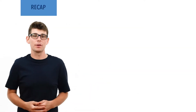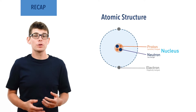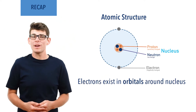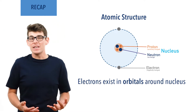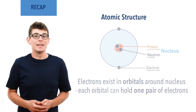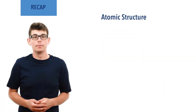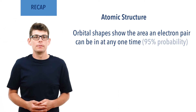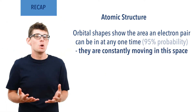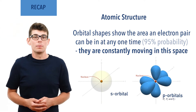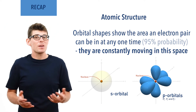Before we talk in detail about covalent bonding, there are a few essential ideas you need to be comfortable with. Atoms are made up of protons, neutrons, and electrons. Negatively charged electrons exist in orbitals around a positively charged nucleus. Each orbital around an atom can hold one pair of electrons. There are different shaped orbitals depending on their distance from the nucleus. At this level, s and p shaped orbitals are the ones most commonly studied, although you do need to be aware of other shapes, especially d orbitals.